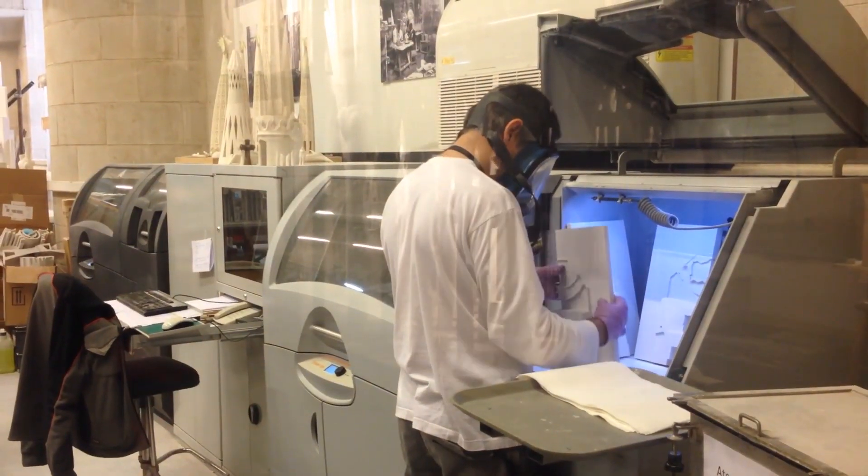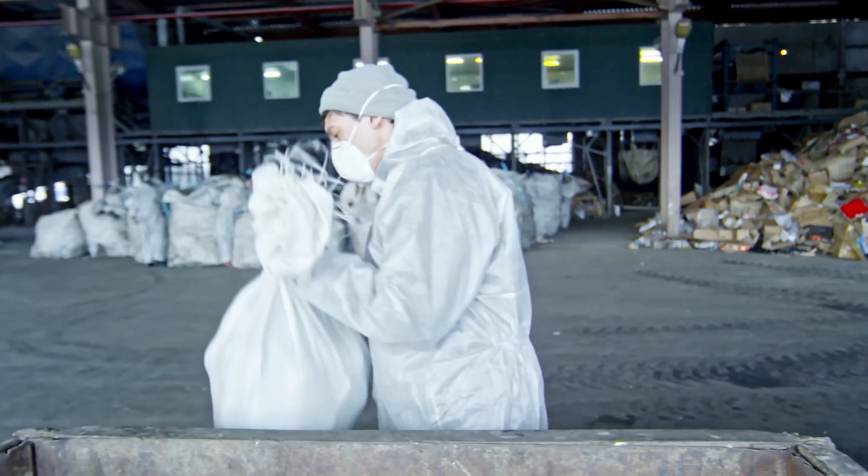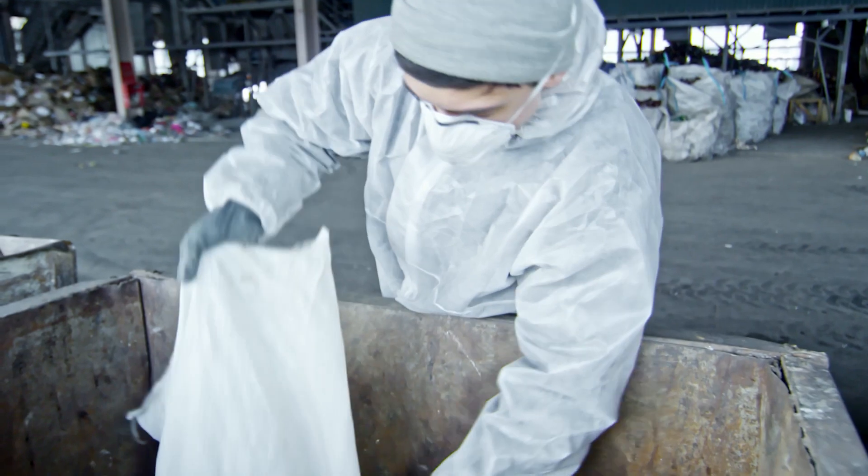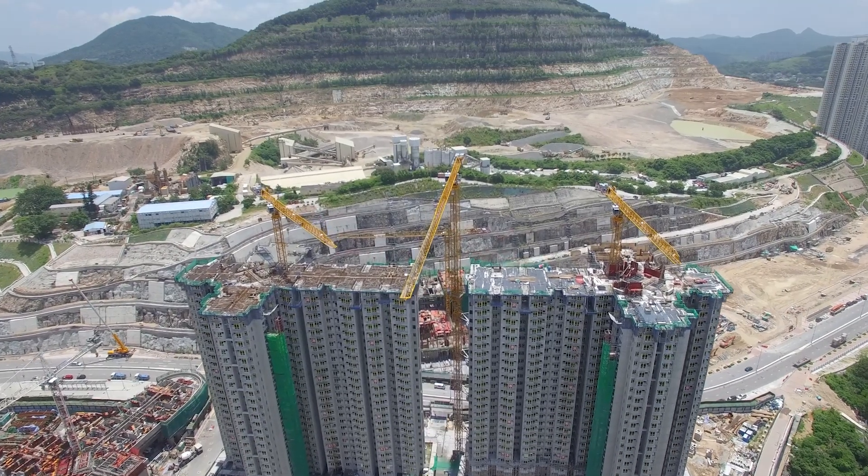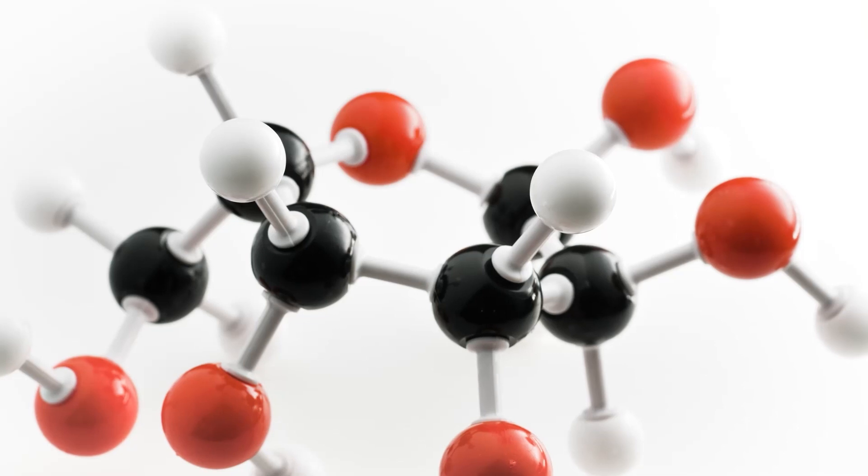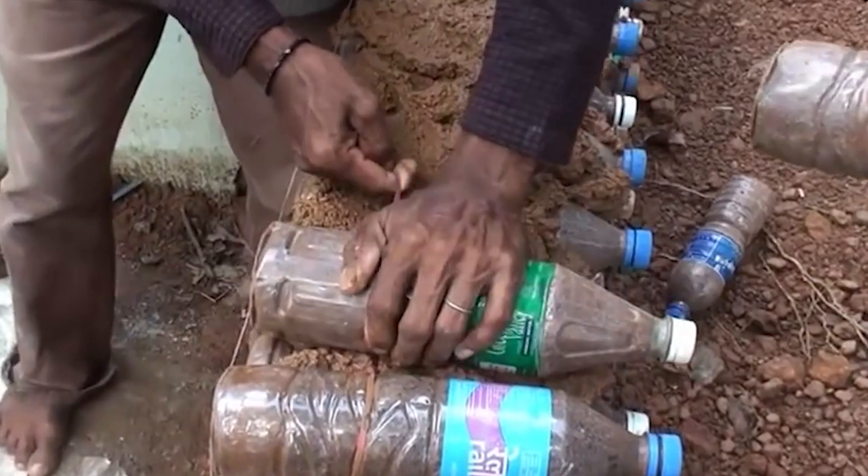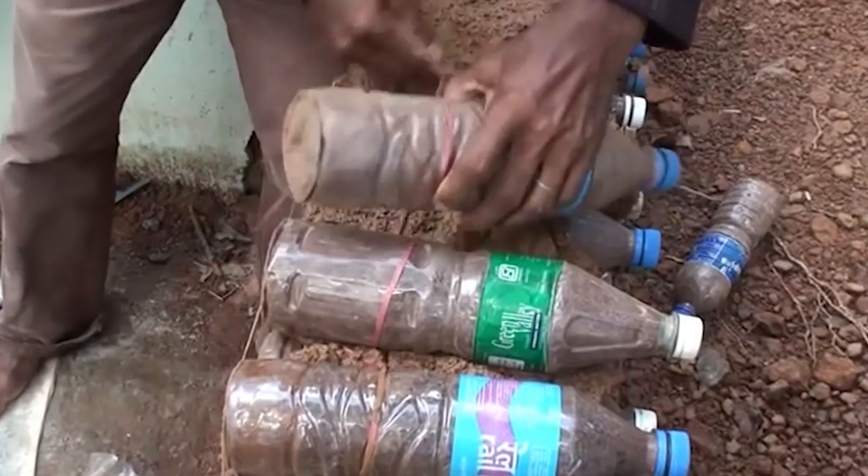But necessity is the mother of invention. Innovative and environment-friendly projects have converted hard-to-recycle plastic waste into building materials and made hurricane and earthquake-proof homes made out of plastic. Some have even used crashed plastic bottles to replace bricks and build sustainable homes.